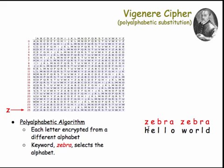To encrypt H, we pick the Z alphabet, we pick H, and then we go down the column to see that that would encrypt to G. For E, we pick the E alphabet, the E column, go down the column, and we see that that encrypts to I.